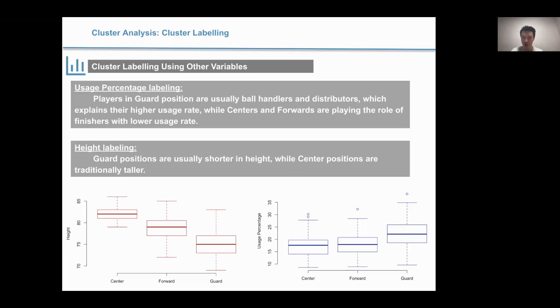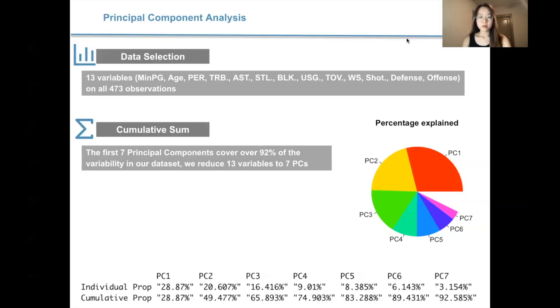Moving on to the portion of principal component analysis, we have 13 variables, including minutes per game, age, player efficiency rating, total rebounds, assists, steals, blocks, usage, turnover, win shares, shots, defense, and offense.